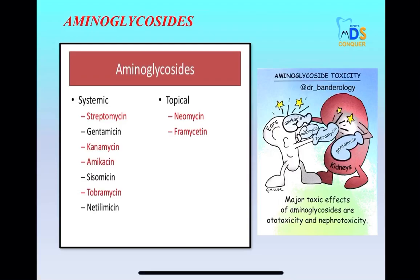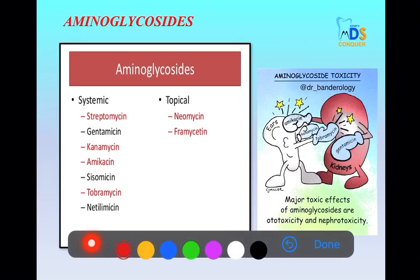Moving to aminoglycosides, which include streptomycin, gentamicin, kanamycin, amikacin, and tobramycin, as well as topical agents neomycin and framycetin. The major toxic side effects of aminoglycosides affect the ears and the kidneys.